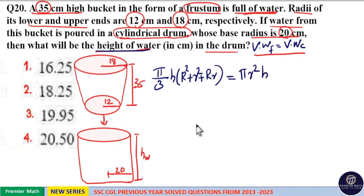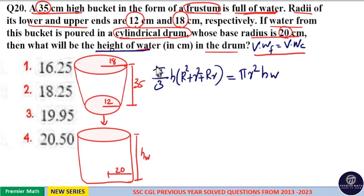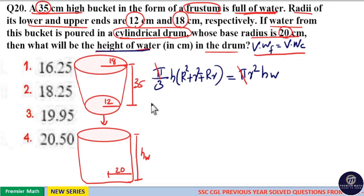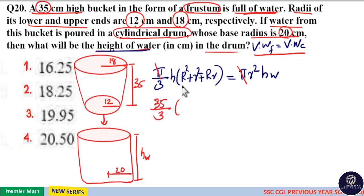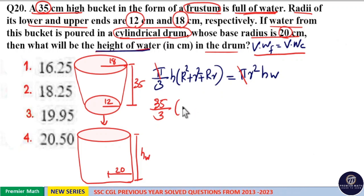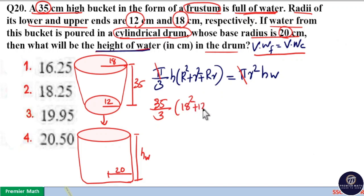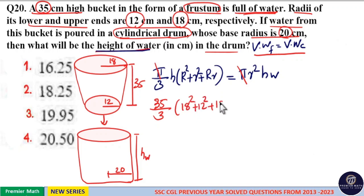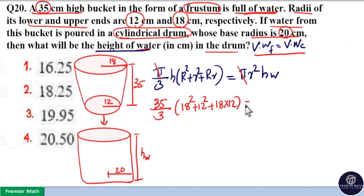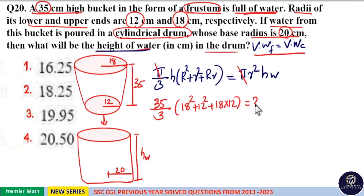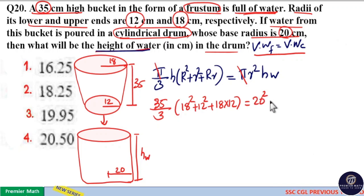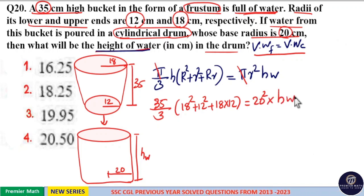Here π and π cancel. The remaining equation gives: (35/3) × (18² + 12² + 18×12) = 20² × height of water. So h is to be found from (35/3) × (R² + r² + R·r) = 400 × h.